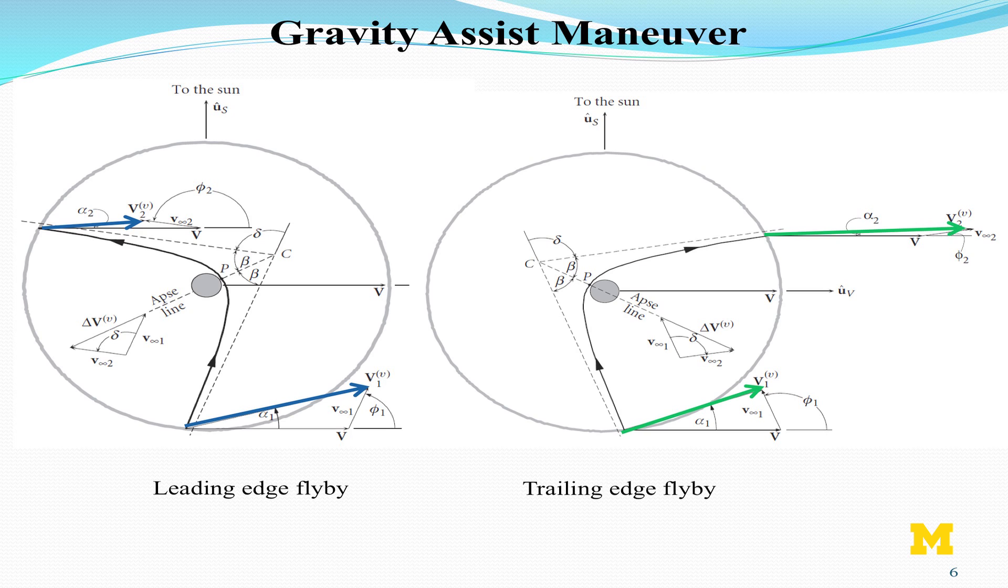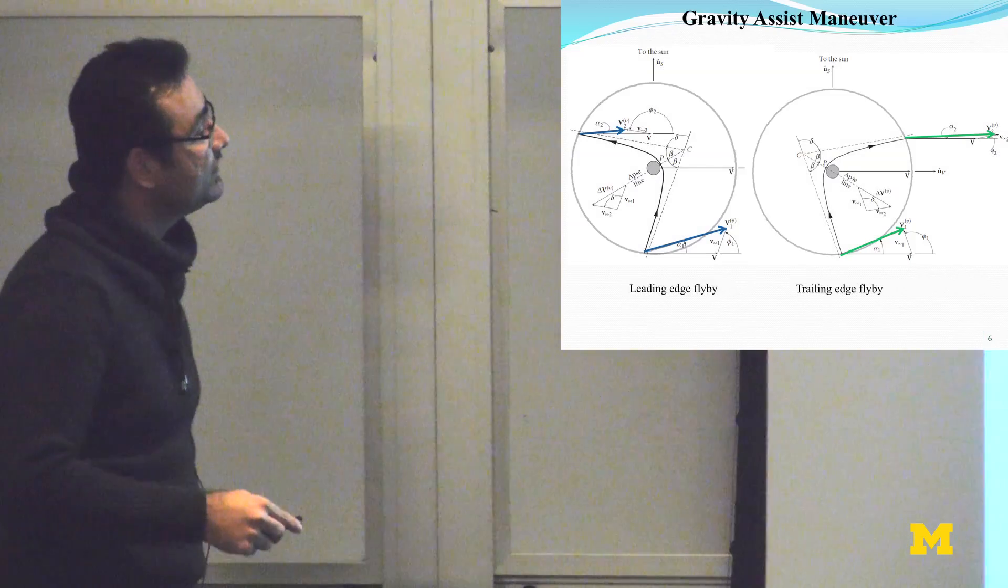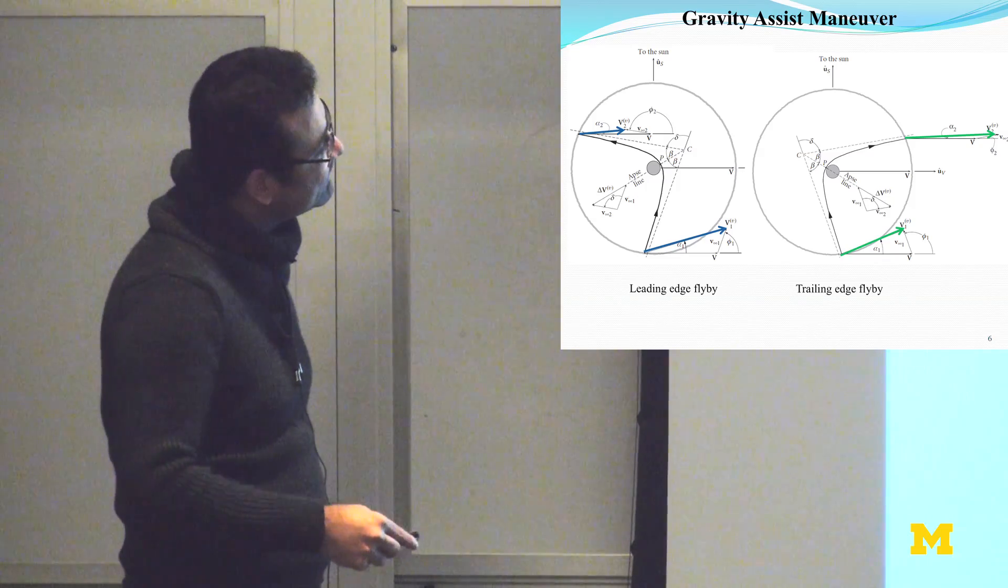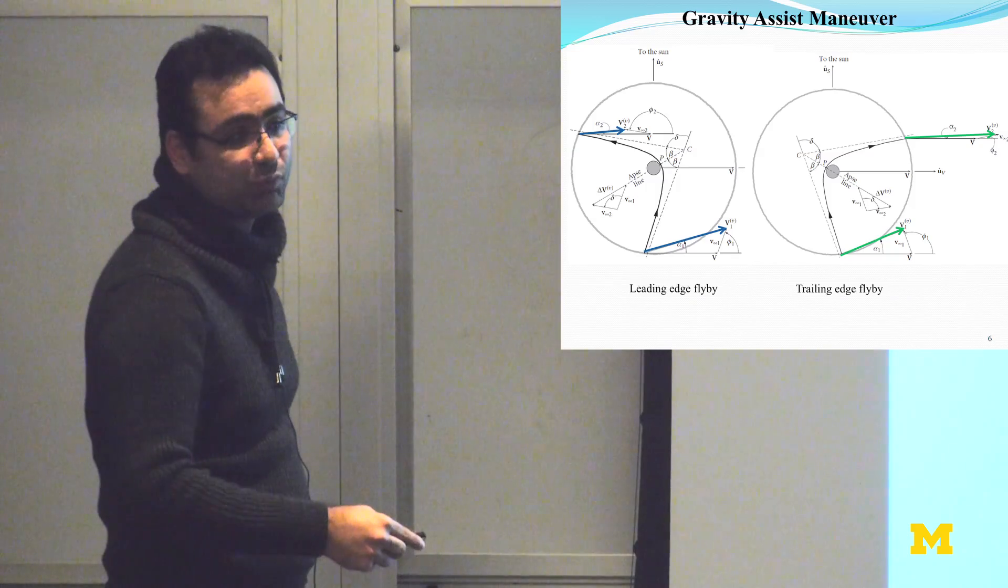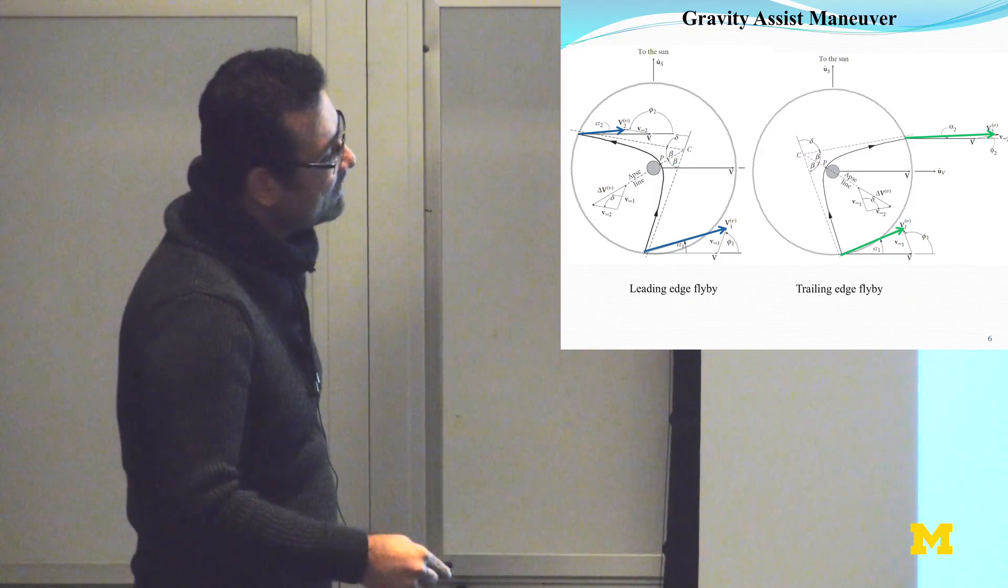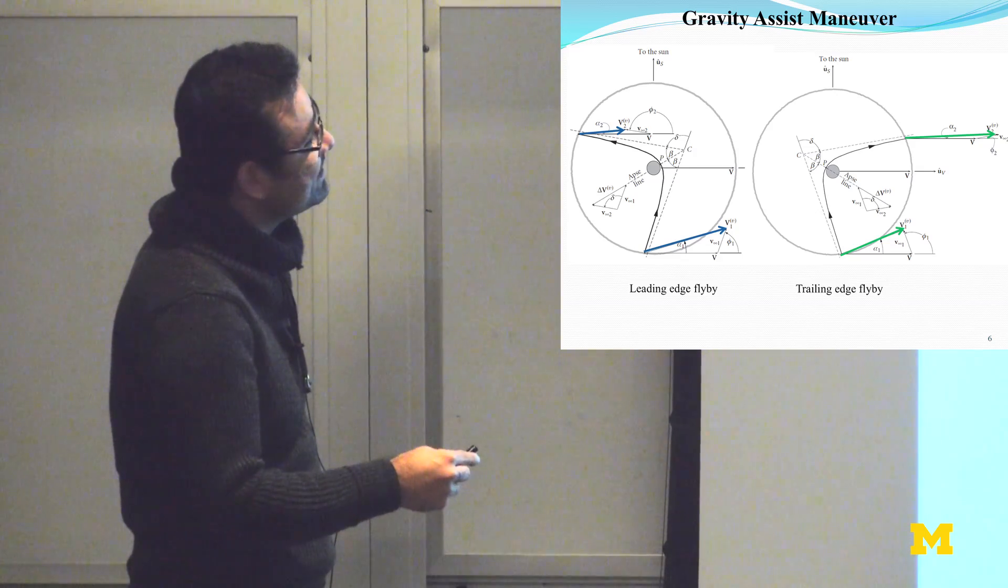The essence is that if you look at the blue vector that I've shown here, around every planet we have a hypothetical sphere within which the spacecraft is influenced only by the central body. That is called the sphere of influence. At the edges of the sphere of influence, the velocity of the spacecraft is important. As you can see, at the entrance of this condition, the velocity at the entrance is bigger than the velocity at the exit.